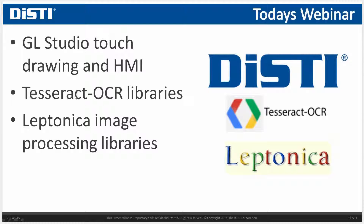We're going to be using an OCR library called Tesseract OCR. It's an older library that's been around for a while. Right now it's maintained by Google Code and it receives updates regularly. We're also going to be using Leptonica, which is an image processing library used by Tesseract to get images in the correct format. I'm going to show you how those can be integrated into GeoStudio, and this is also a good example of how easy it is to integrate third-party libraries with GeoStudio.